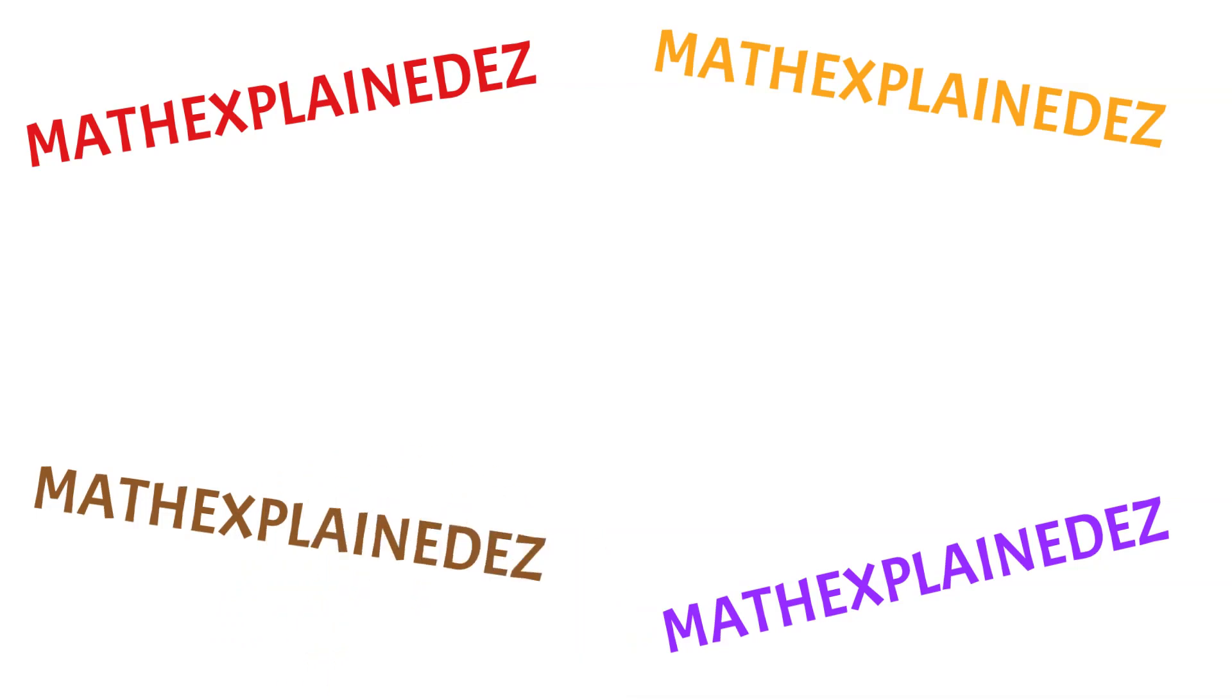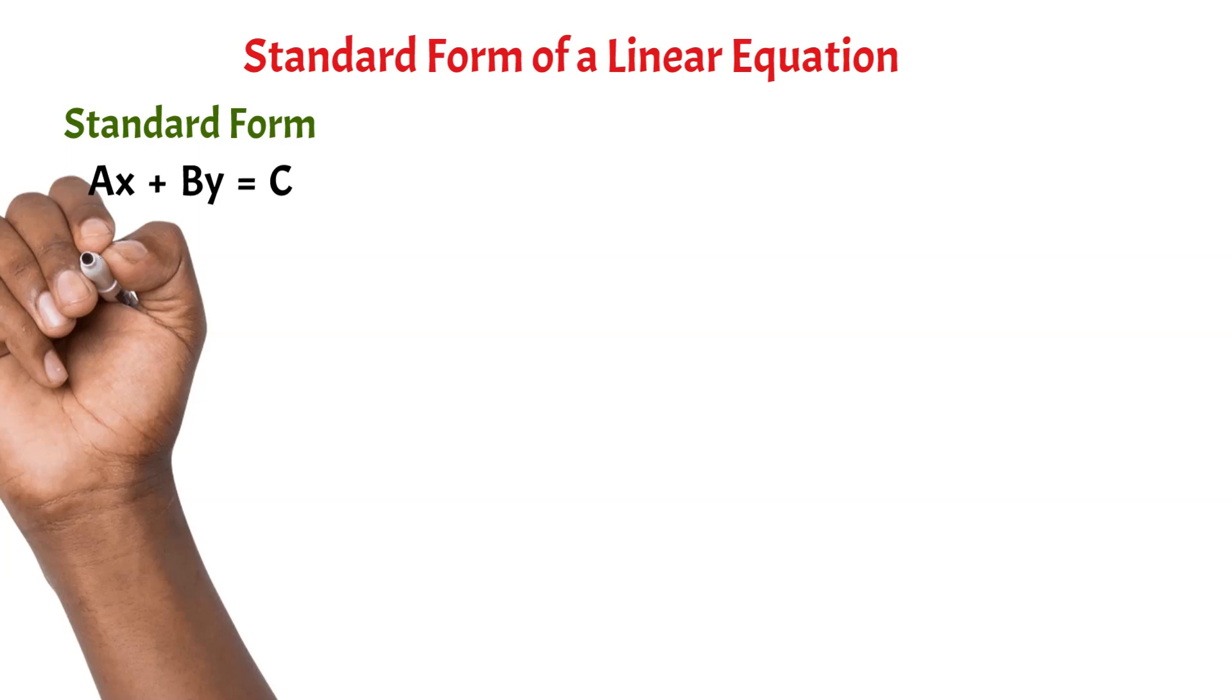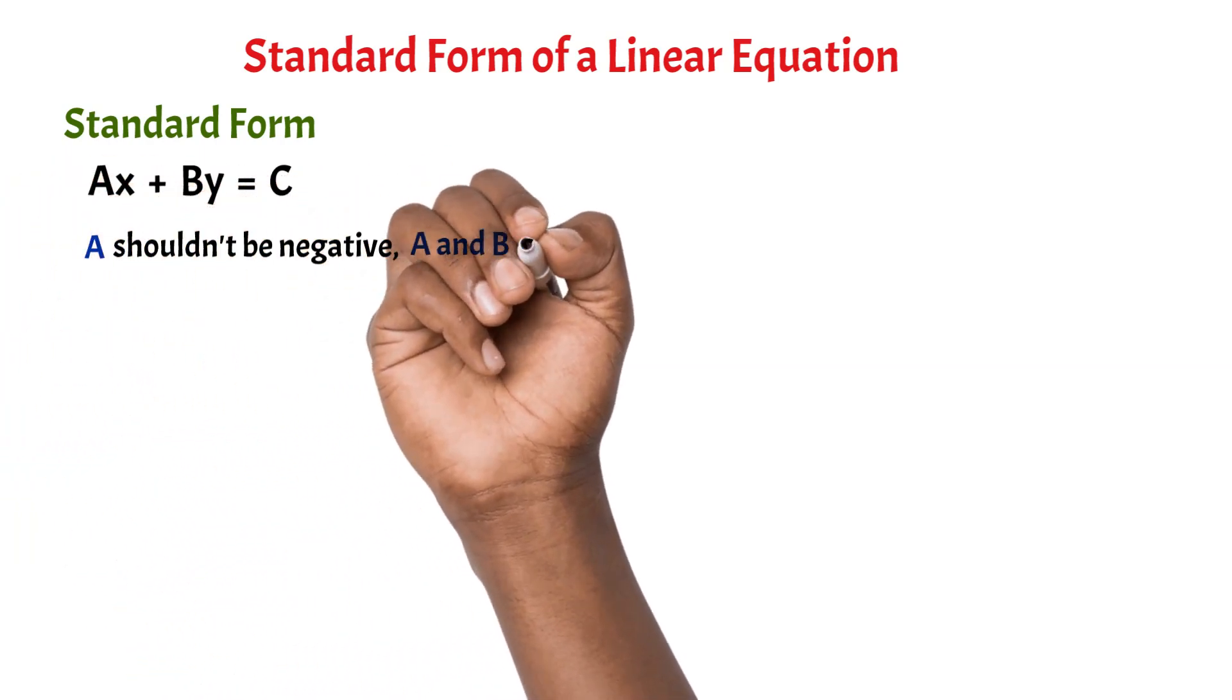Welcome to my channel, Math Explained Easy. In today's lesson, we will learn about the standard form. The standard form is Ax + By = C, and A shouldn't be negative, and B shouldn't be zero at the same time, and A, B, C should be integers.